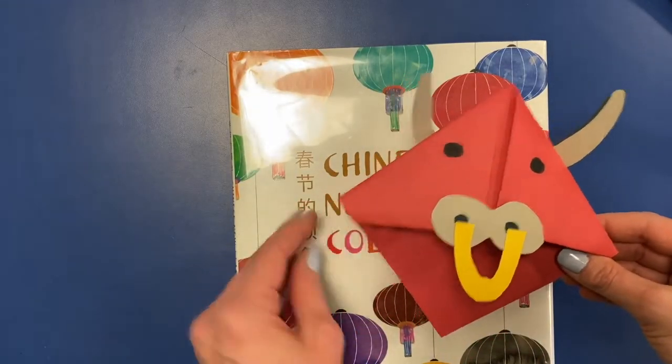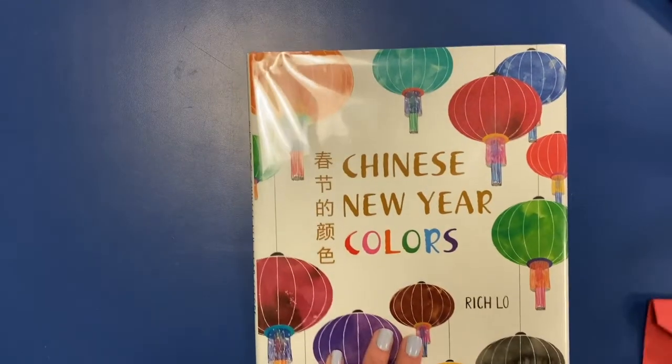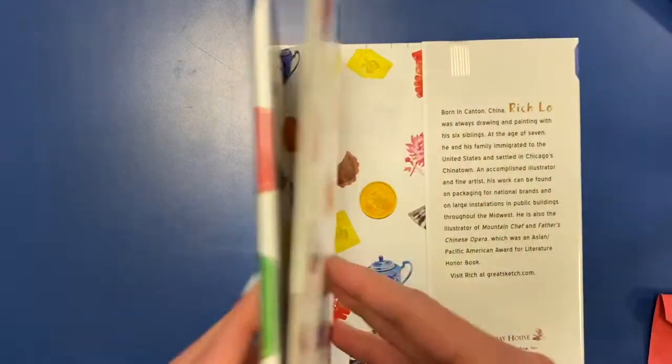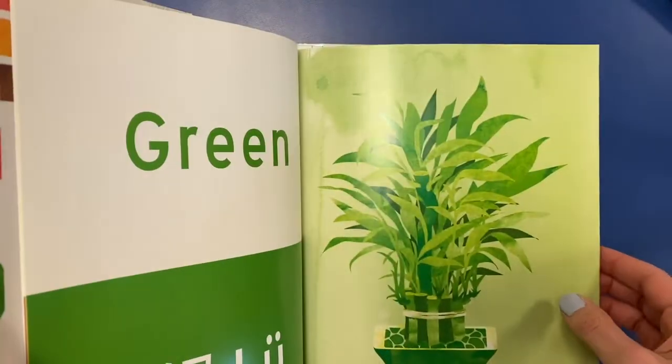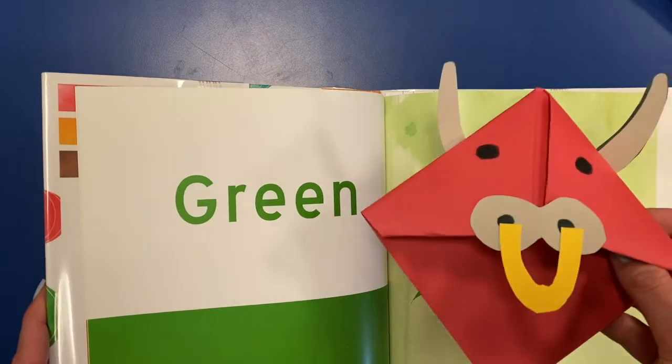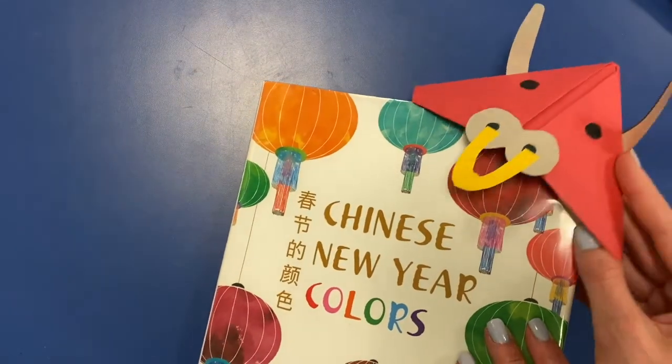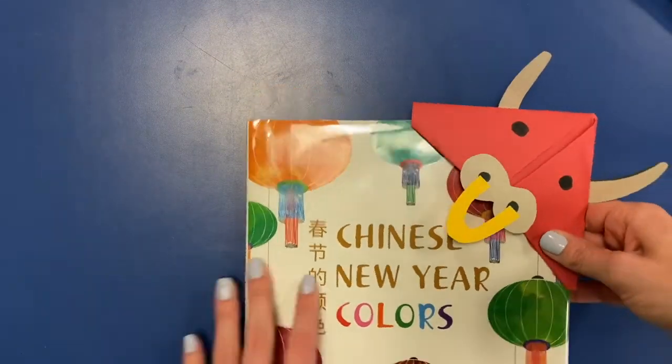Now that our bookmark is dry, we can grab one of our favorite books. And whenever we get to a stopping point when we're reading, we're just gonna take our Ox and we're gonna stick it right here in the corner to save our spot.